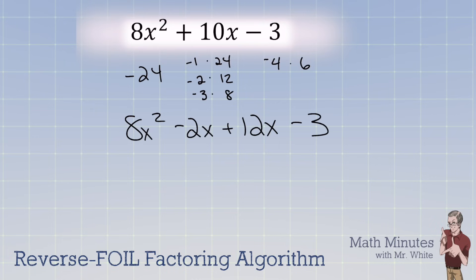And from here on out, we're just doing the grouping method. We factor out the greatest common factor on the first two. And that leaves 4x minus 1. And then on the second, we factor out a 3. And we've got our fingers crossed. So we're going to see a 4x minus 1. And look at that. We do. We have a 4x minus 1. So the factorization would be 4x minus 1 times 2x plus 3.